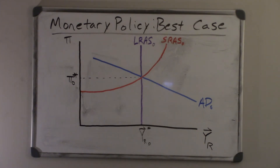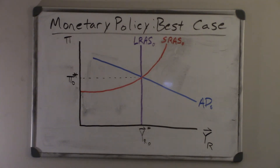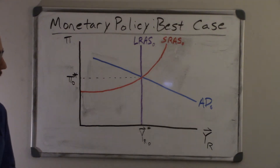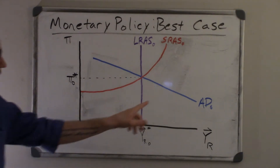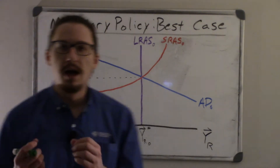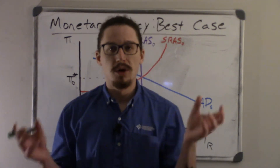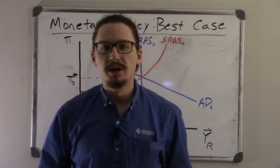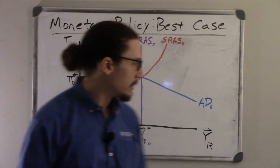The most straightforward case of monetary policy is a negative shock to aggregate demand, specifically one that is due to consumer and investor fears. We know from chapter 32 on aggregate supply and aggregate demand that the aggregate demand curve is based off of two things: the money supply growth rate and the velocity of money growth rate. Add those two together and you get the spending growth rate, which is what the aggregate demand curve is based off of.